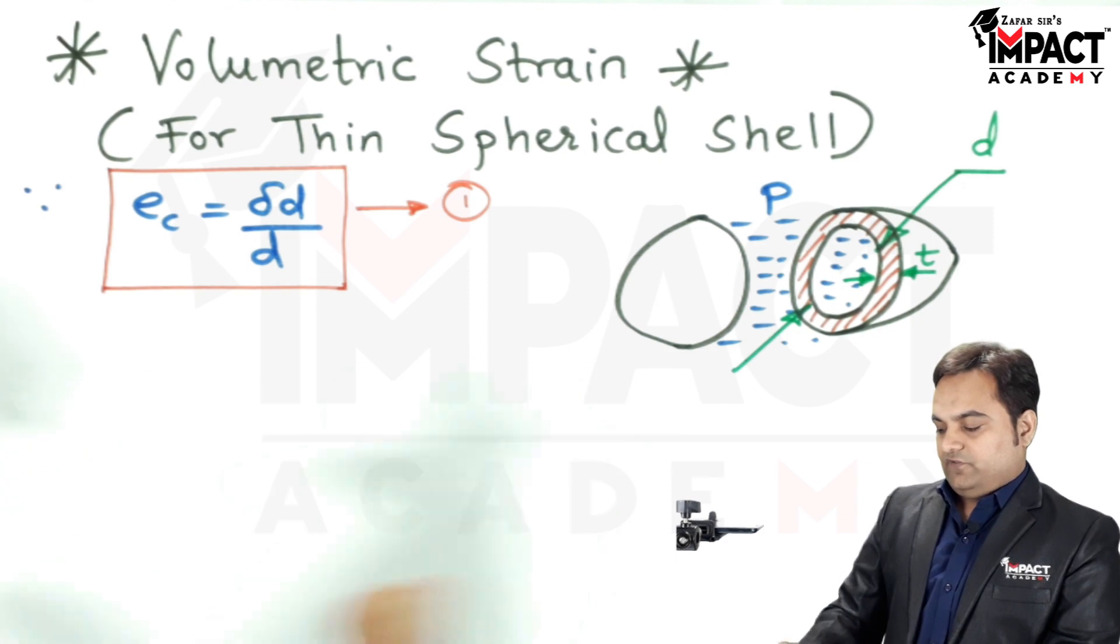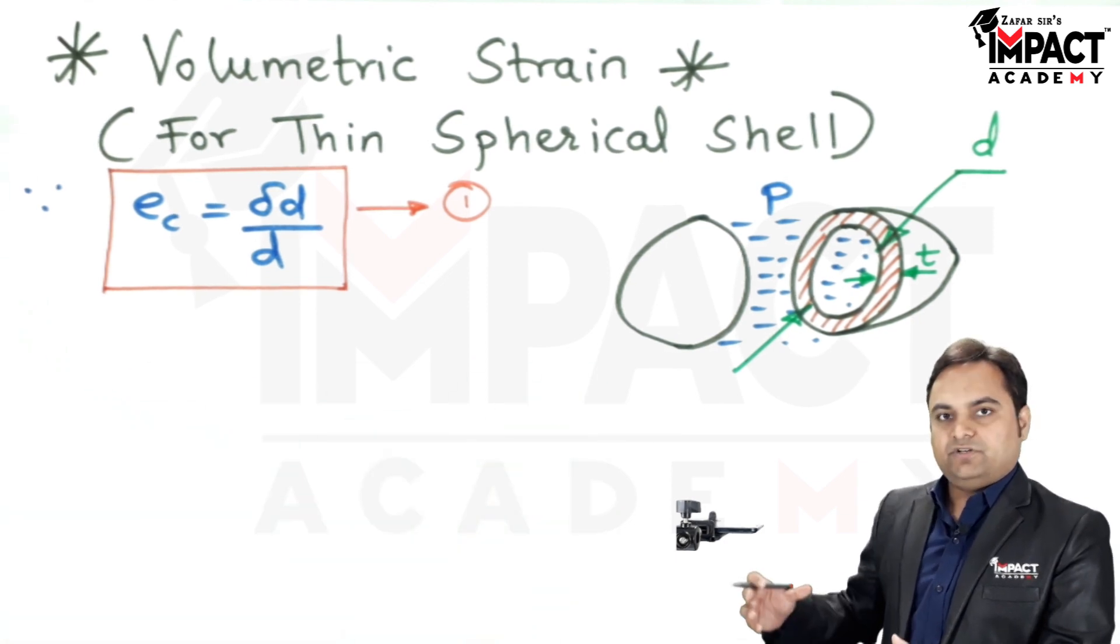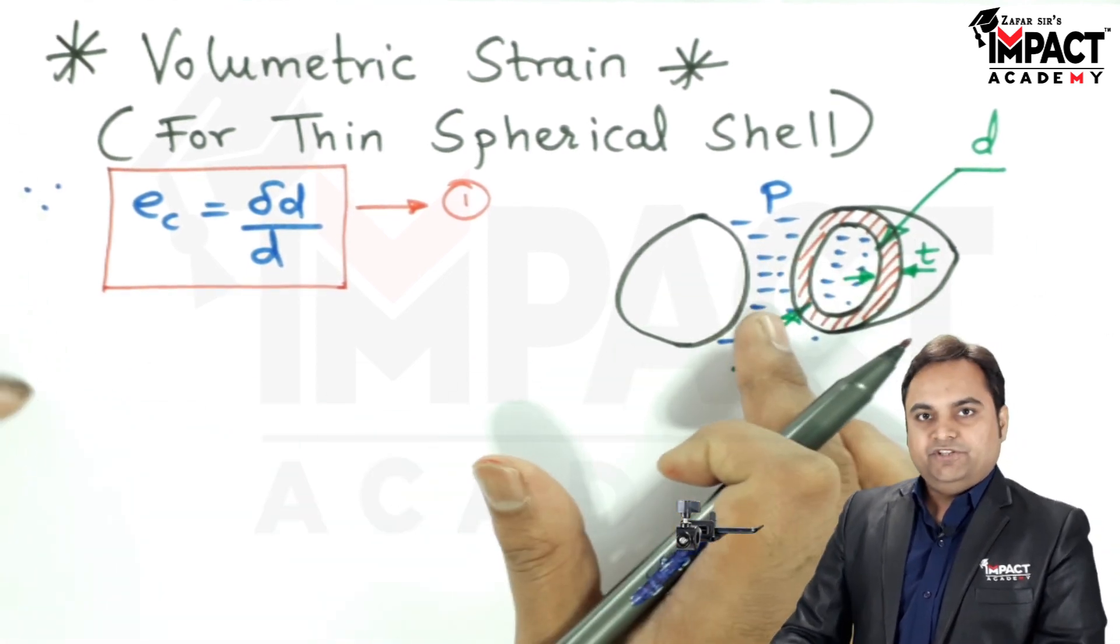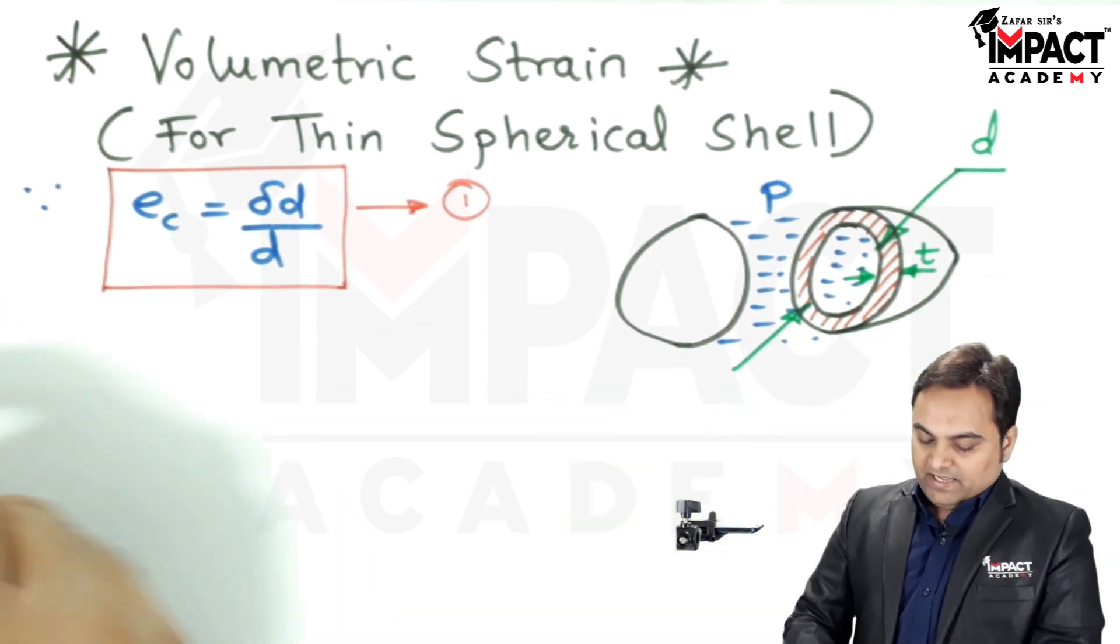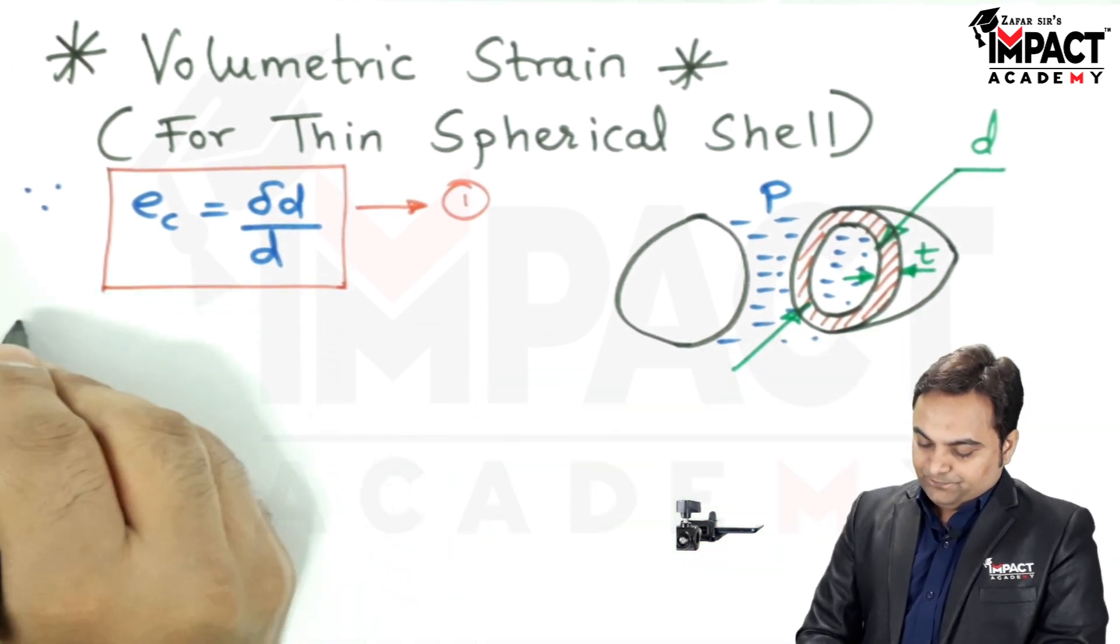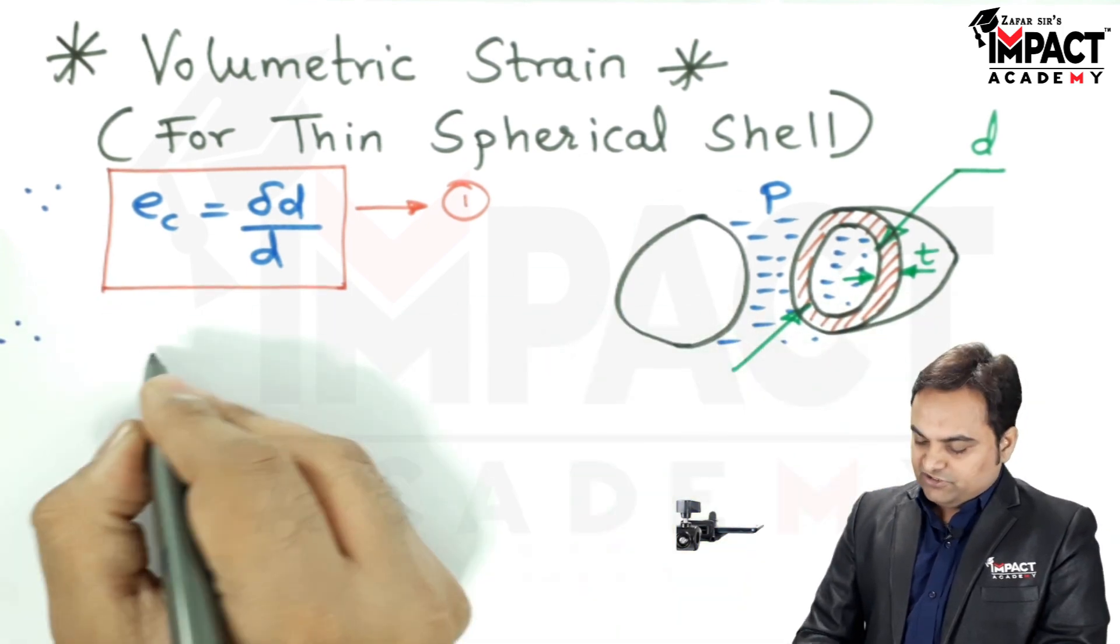Because, as we see here, when this spherical shell is getting burst, then there would be change in the diameter. And therefore, when I apply the circumferential strain for the complete spherical shell,